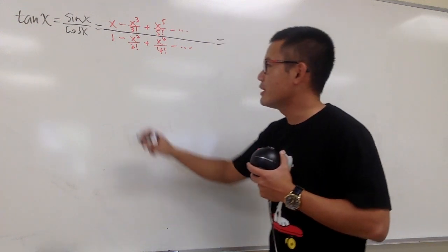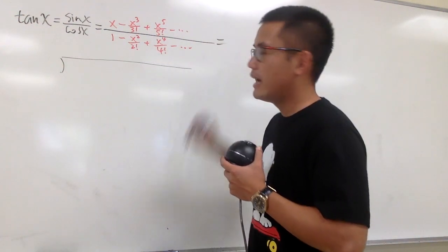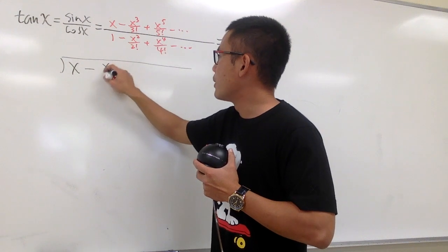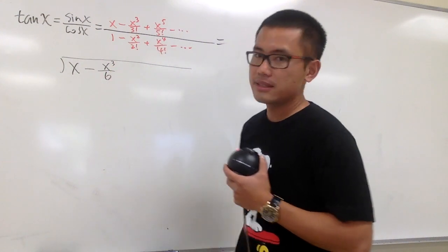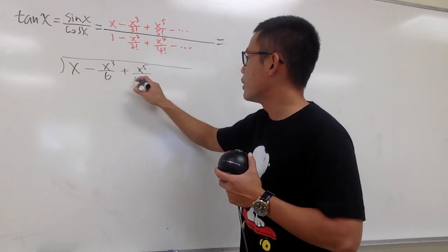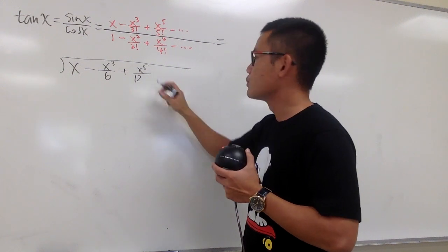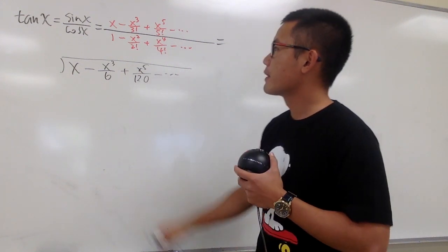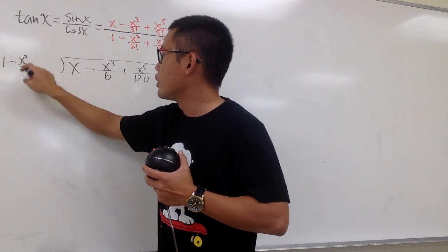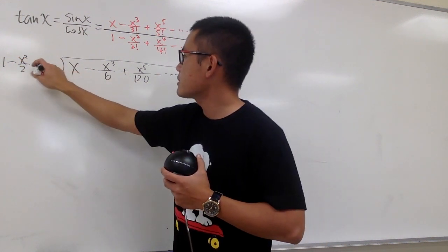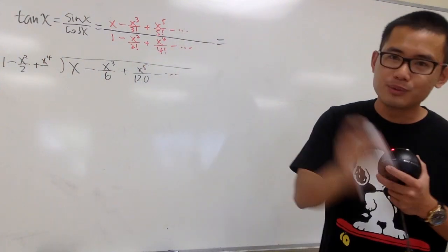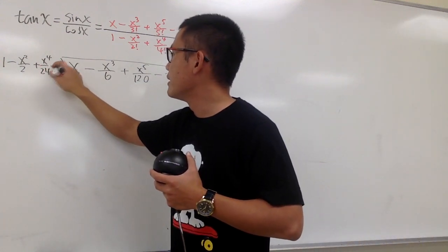I'm going to do the long division right here. Put the top inside: x minus x to the third power over 3 factorial, which is 6, plus x to the fifth power over 5 factorial, which is 120. And we put this on the outside: 1 minus x squared over 2 factorial, which is 2, plus x to the fourth power over 4 factorial, which is 24, and so on.